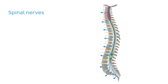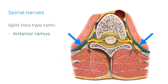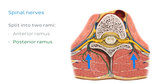These spinal nerves exit the vertebral column through the intervertebral or sacral foramina and provide innervation to muscles, skin, and organs throughout the body. When spinal nerves exit through the intervertebral foramina, they split into two rami: an anterior ramus and a posterior ramus. The posterior ramus is smaller, usually traveling immediately posteriorly to provide innervation to structures such as the deep muscles and the skin of the back.